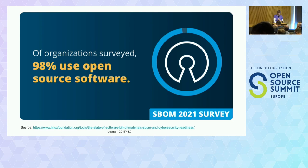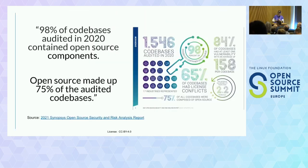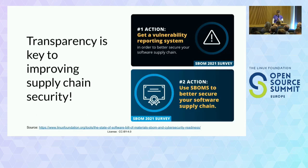This also bears out what Synopsis found in their survey last year: 98% of the codebases they audited had open source components, and open source made up 75% of the applications. Understanding all those open source components and the relationships between statically and dynamically linked information needs to be transparent and accessible to quickly determine: am I vulnerable or not?